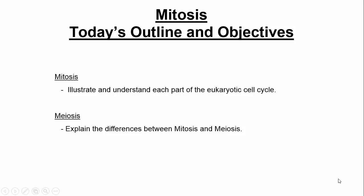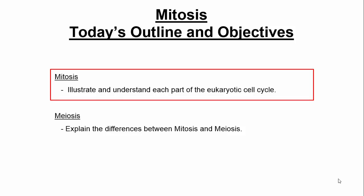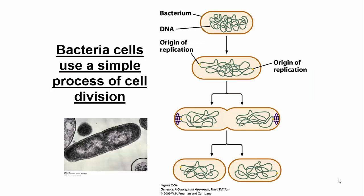In today's lecture, we're going to cover mitosis. I'd like to illustrate and help you understand the different parts of the eukaryotic cell cycle. And then we're going to focus on how mitosis is different than meiosis. So let's focus on mitosis first, which is part of the eukaryotic cell cycle.